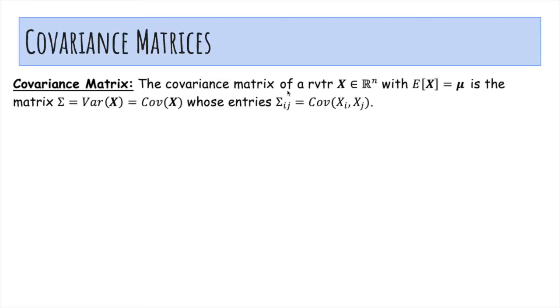So the covariance matrix of a random vector with n components with mean vector mu is the matrix sigma. It's n by n, also denoted variance or covariance of X, whose entries sigma ij are just the covariance between xi and xj.